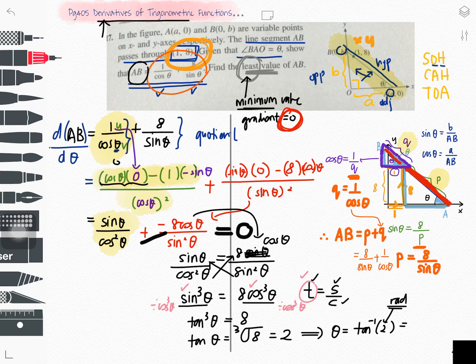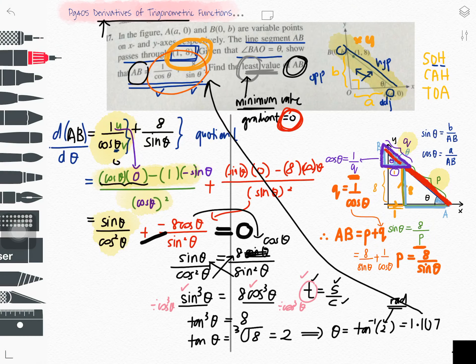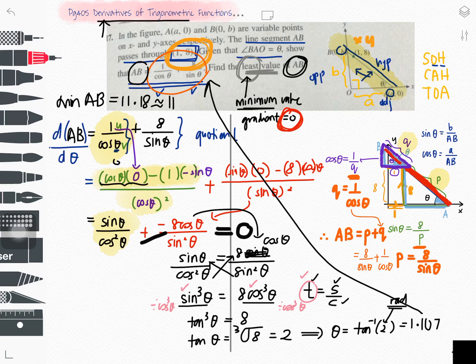Substituting θ ≈ 1.107 back into AB = 1/cos θ + 8/sin θ gives AB ≈ 11.18. Rounding to three significant figures, the minimum (least) value of AB is 11.2.